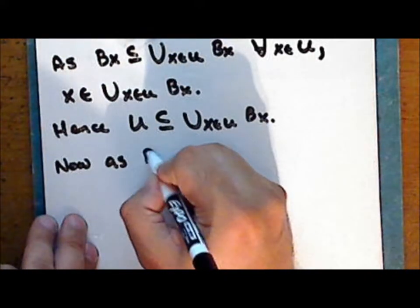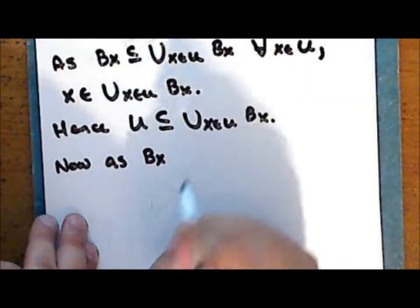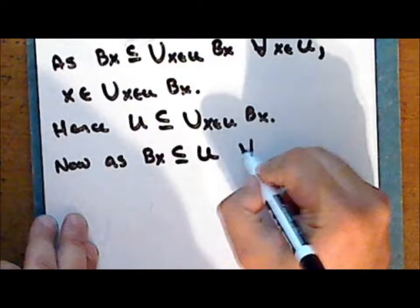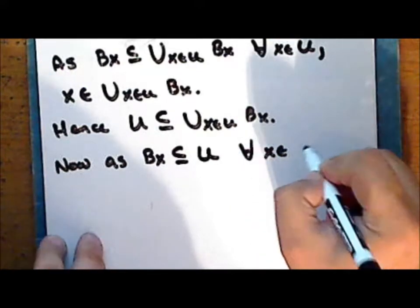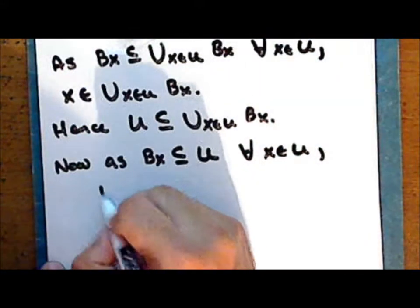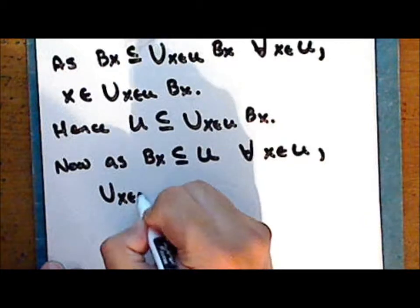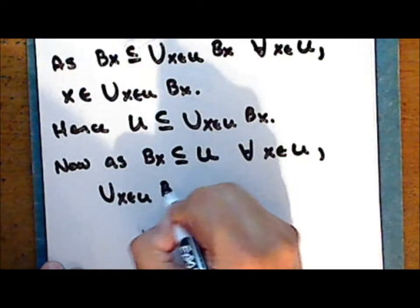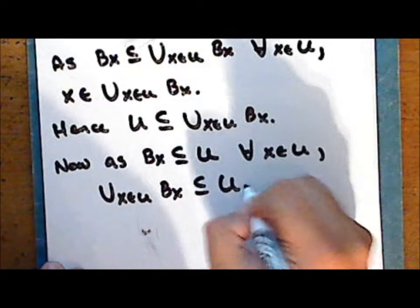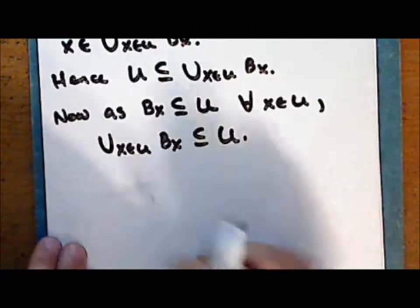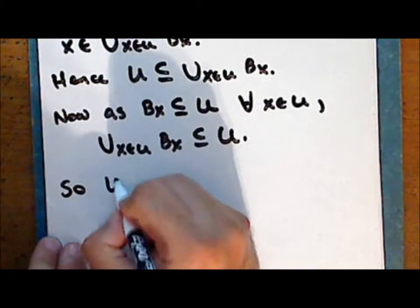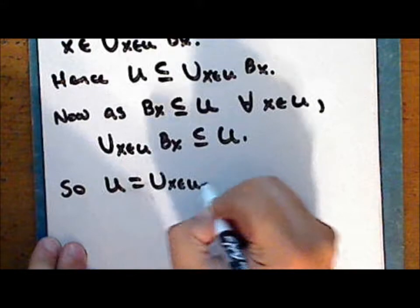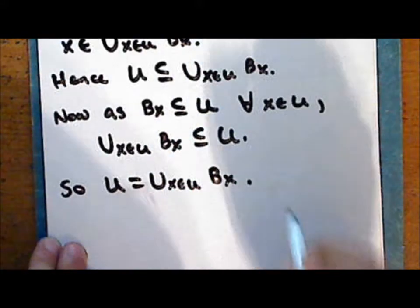Now, as the element B_x is a subset of the set U for every index x in U, we have that the union of these sets is a subset of U. So we have set inclusion in both directions, so that the set U is the union of some basis elements.